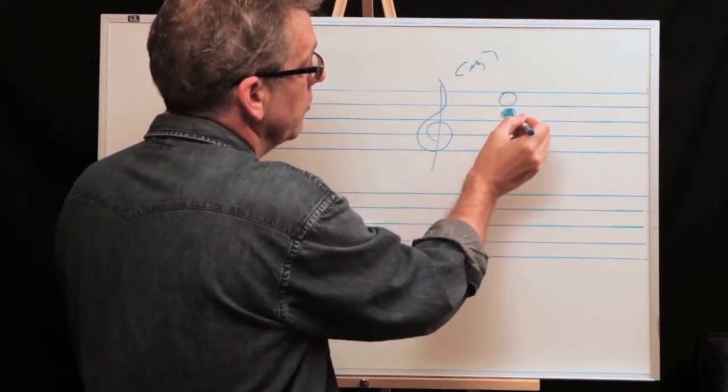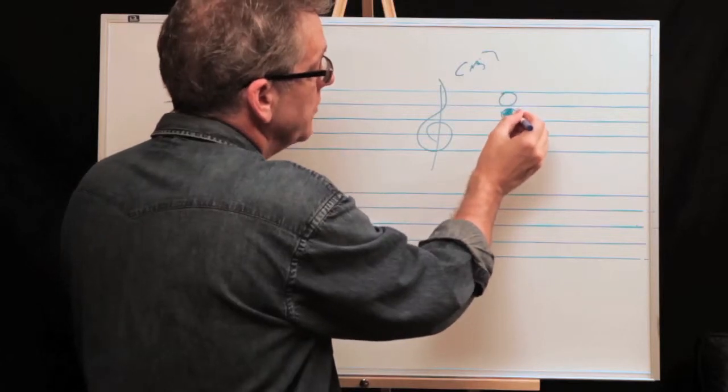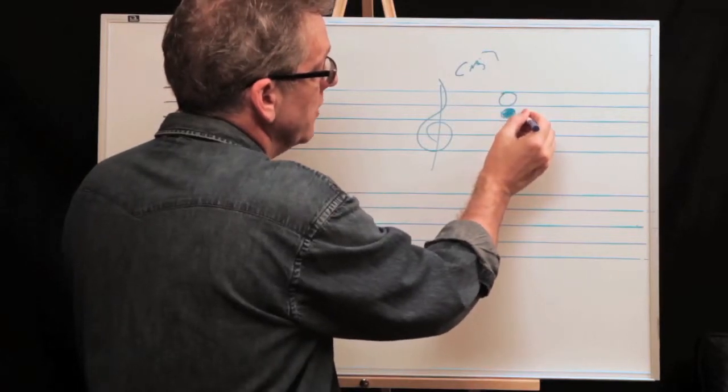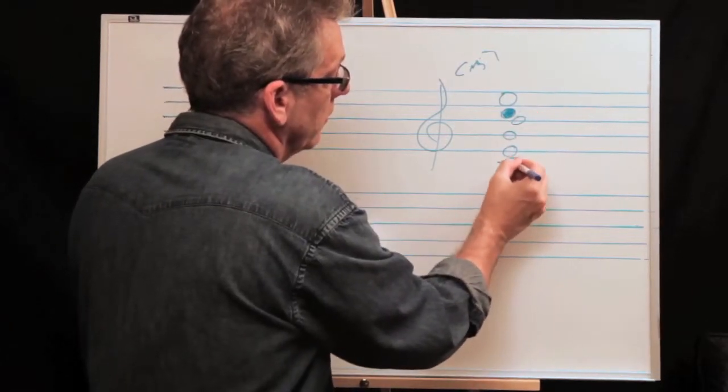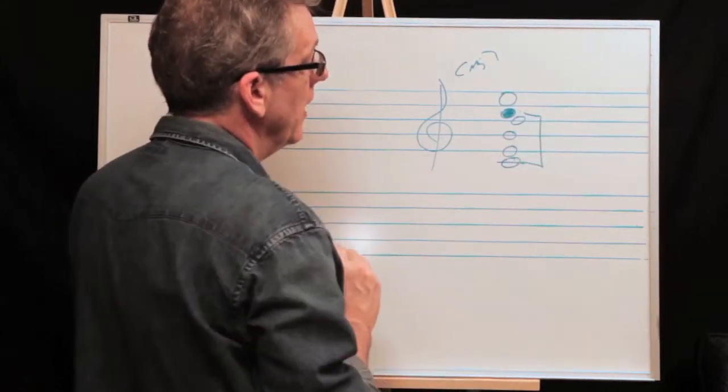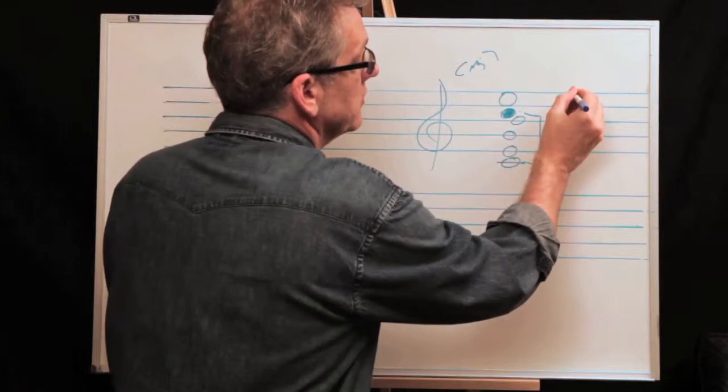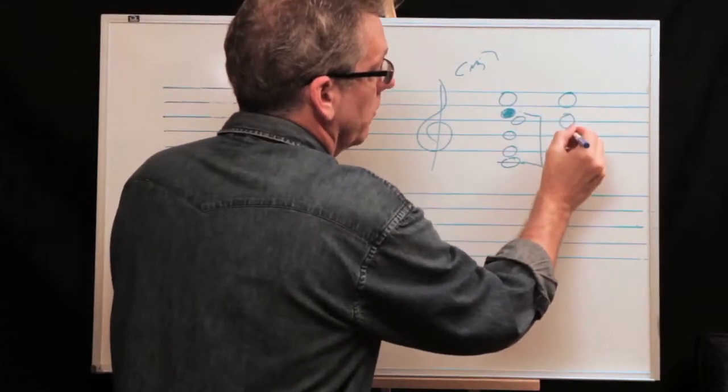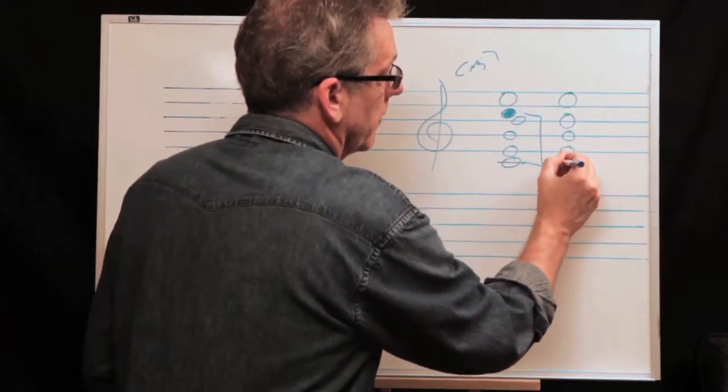which basically is you drop the second voice of the voicing down an octave. So the second voice from the top would be the C, would be this voice right here. Okay, this would be the first voice, second, third, fourth, so on. So you drop this C, the second voice at the top, you drop him down an octave to this C. So he's gone from here to here. Okay, so your voicing would look like this now.